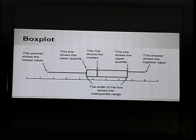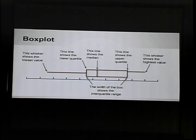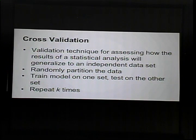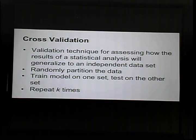I'll be showing lots of box plots — a great way to display the distribution of your data. The middle line is the median, the box contains 50% of your data, and the whiskers contain the other quarters on each side. Cross-validation is a technique for seeing how well your model will do on an independent set. You randomly partition the data, train on one set, and test on the other, repeating k times. In our notebooks we randomly select 80% of the data to train on and test on the other 20%, doing this ten times to make sure we didn't just get a lucky training set.